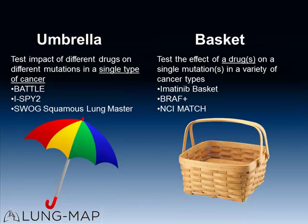The goal here was to try to develop a trial where we could treat patients with lung cancers with genetic abnormalities in specific ways. Right now, in drug development, as we move into the molecular age, there are two types of trials that are being contemplated and being formed. One is an umbrella trial, and the other is called the basket trial.